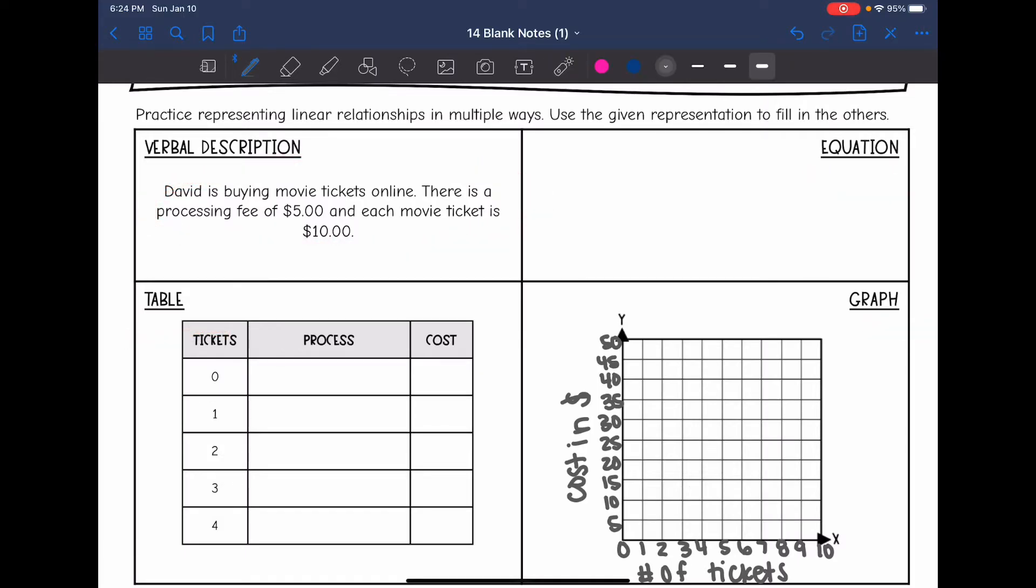On this first one, we are given the verbal description and we need to fill out the equation, table, and graph. Let's read it and then we'll start with the equation. It says David is buying movie tickets online, there is a processing fee of $5, and each movie ticket is $10. For our equation, we need to know the slope and the y-intercept.